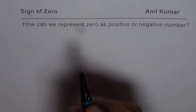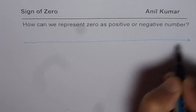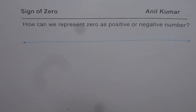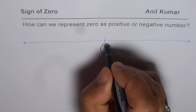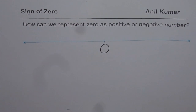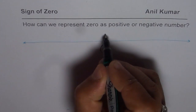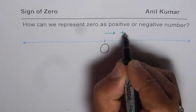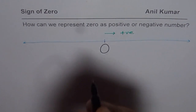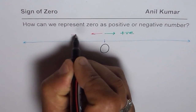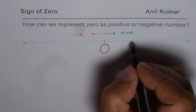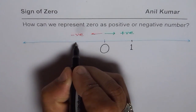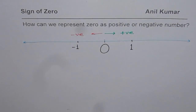So as usual let's begin with a number line. Let me draw a long number line with a big zero in the center. Anything to the right of this zero is positive, and anything to the left of this zero is negative. So if I write the number one, one on the right side is positive one, and one on the left side is negative one.